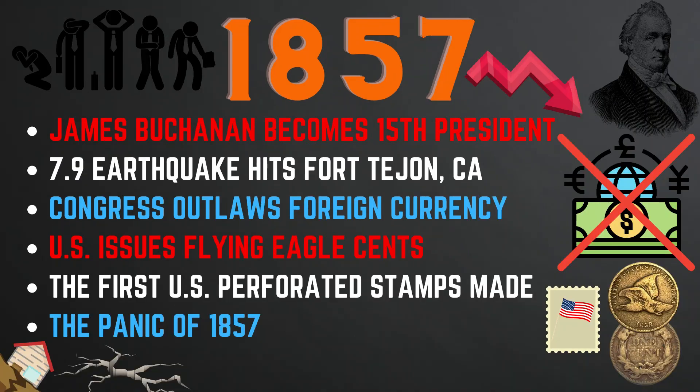In 1857, James Buchanan became the 15th president of the United States. A 7.9 earthquake hit Fort Tejon, California. Congress outlawed foreign currency. The U.S. issued the Flying Eagle cent, and the first U.S. perforated stamps were made. Also, the Panic of 1857 ensued due to uncertainty caused by the poor international economy and the expansive booming domestic economy.